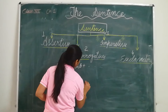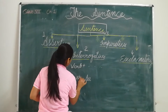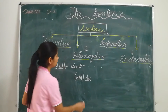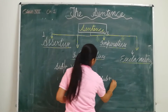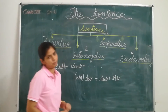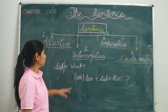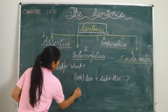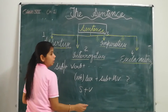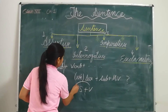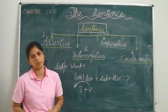In an interrogative sentence, the structure is different. The interrogative sentence begins with an auxiliary verb. If there is any WH word, it will be placed before the auxiliary verb: WH word + auxiliary verb + subject. If there is a main verb, all other verbs will come after the subject, and it will end with a question mark. The major difference from assertive is that the verb comes before the subject.